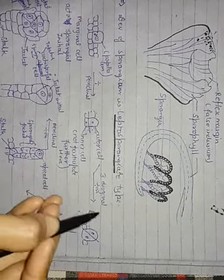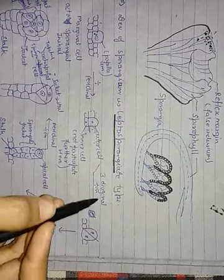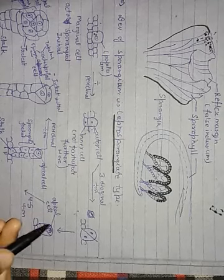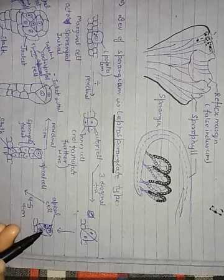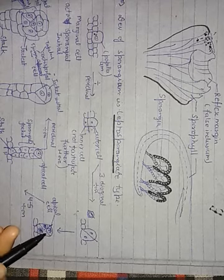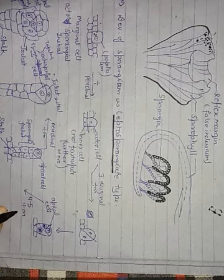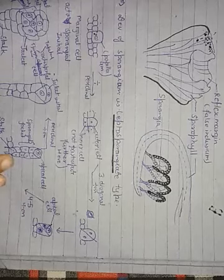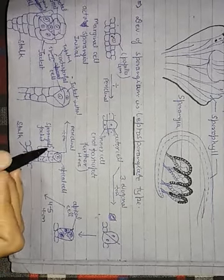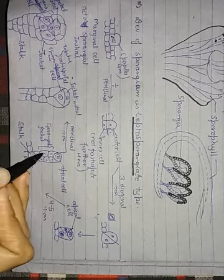Three diagonal divisions means the outer cell will be diagonally divided, forming an apical cell. This apical cell divides four to five times. It forms a small stalk and the sporangial head. This means it will form the sporangial body.